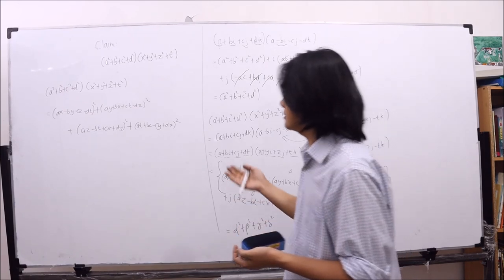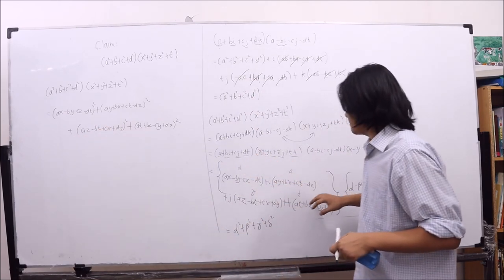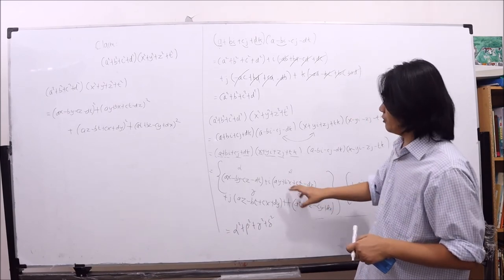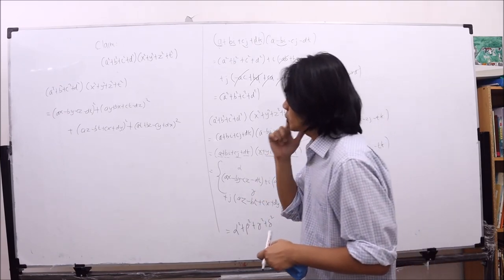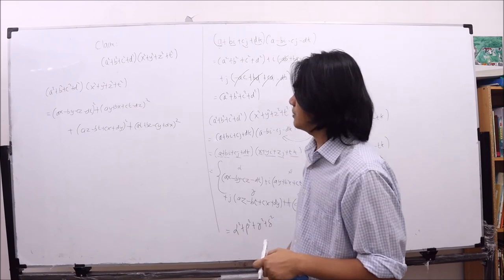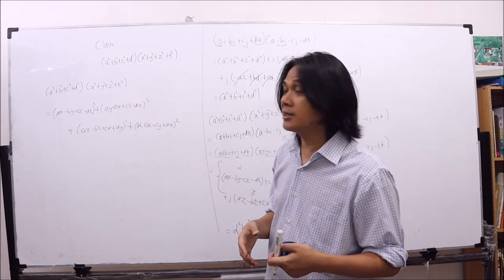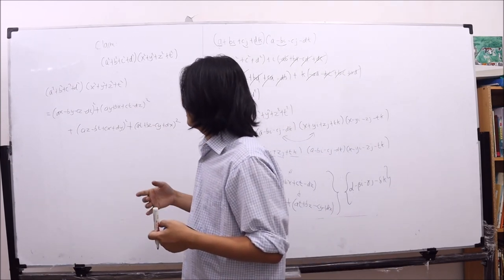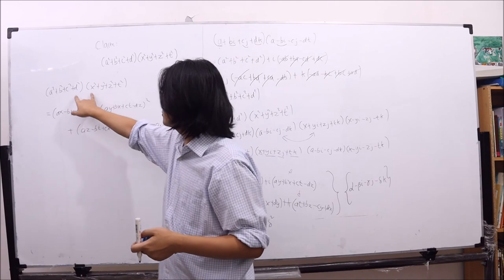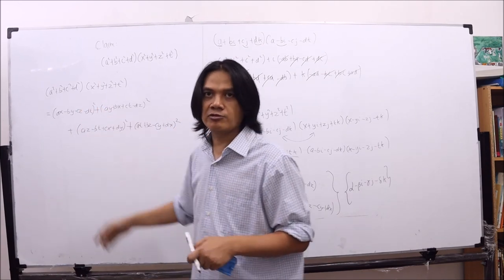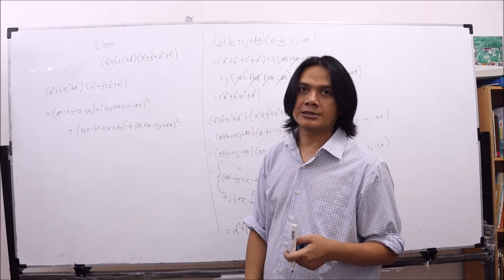I might have made some arithmetic mistakes in the calculation. To verify, you can double-check by plugging in the expressions for alpha, beta, gamma, delta and seeing whether the result matches the left-hand side, or multiply everything out and check that the difference is zero.